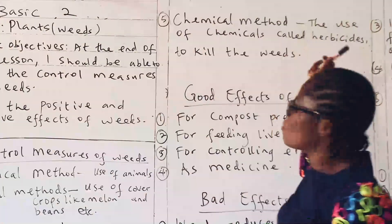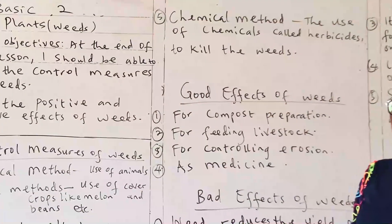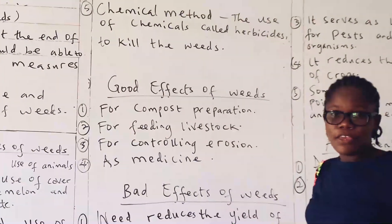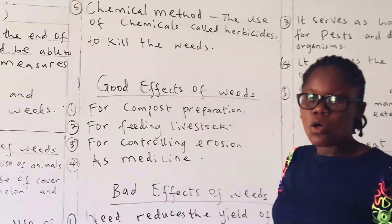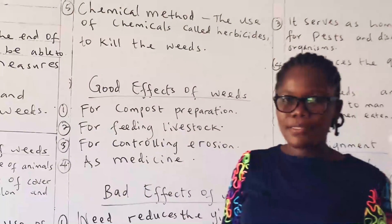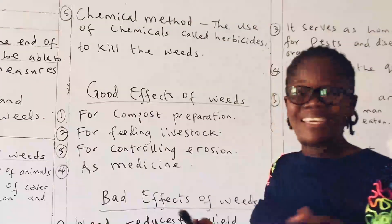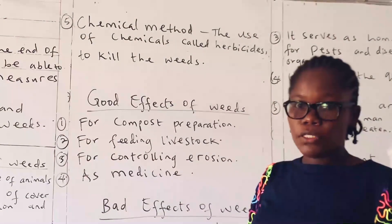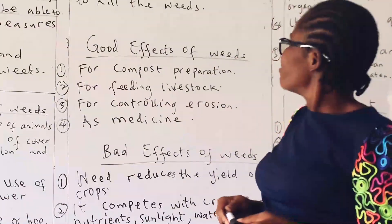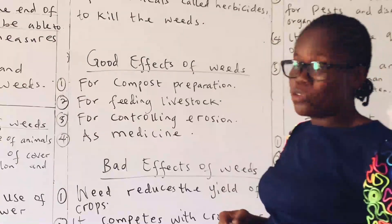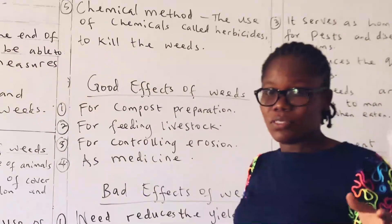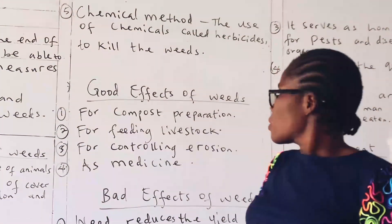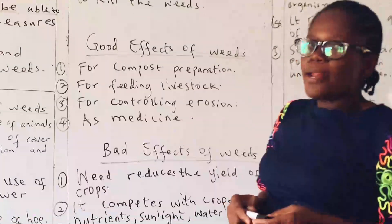The chemical method is simply the use of chemicals called herbicides to control or to kill weeds. The chemicals used to control these weeds are what we call herbicides.